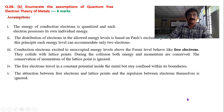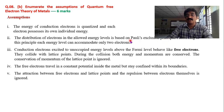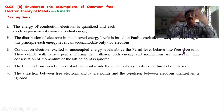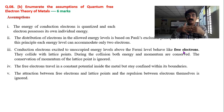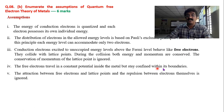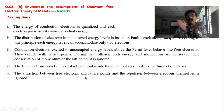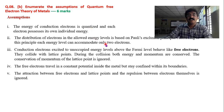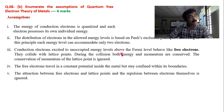Next question: assumptions of quantum free electron theory. Energy levels are discrete, therefore quantized. Distribution of electrons is governed by the Pauli exclusion principle. Electrons above the Fermi level are considered free electrons; electron-electron collisions are neglected while electron-atom collisions are considered. Free electrons are assumed to travel in a constant potential inside the metal. Attraction between free electrons and lattice points, and repulsion between electrons, are neglected.